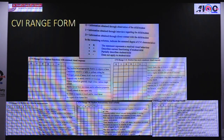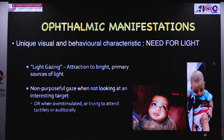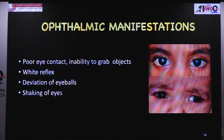Coming to ocular manifestations as a child presents: we know there is visual impairment and parents bring the child when they notice the child is not looking at faces. There is always a need for light — the child does light-gazing attracted to bright primary sources, or has a non-purposeful gaze even with interesting targets. These children may have white reflex, deviation of eyeballs, or shaking of eyes. CVI and OVI are interlapsed, but CVI must be addressed because despite treating the ocular visual impairment, children will not perform better.